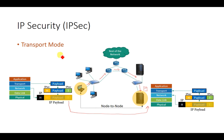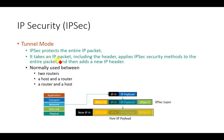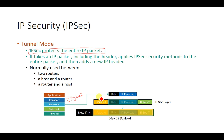The problem with transport mode is that only the payload is protected, not the entire IP packet. Tunnel mode solves this — in tunnel mode, IPsec protects the entire IP packet. The transport layer generates a packet, the IP payload is attached with an IP header to form a complete IP packet, and this entire packet is then transferred to the IPsec layer.